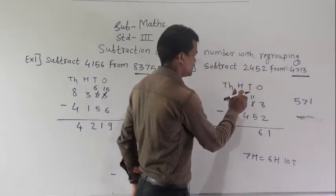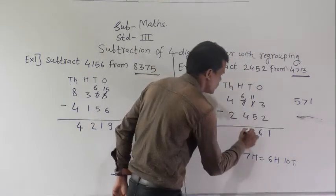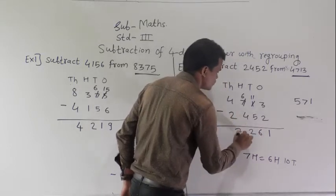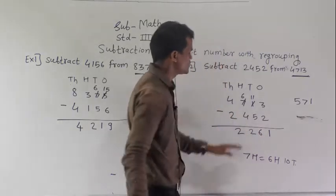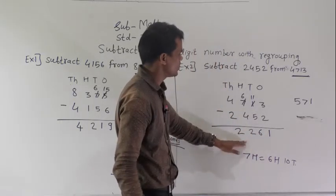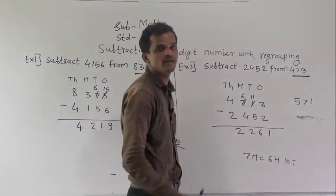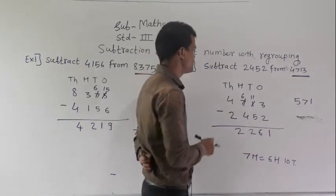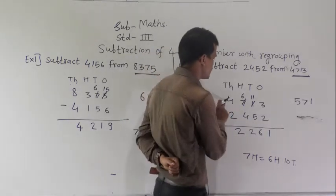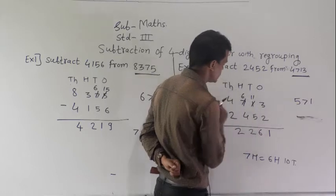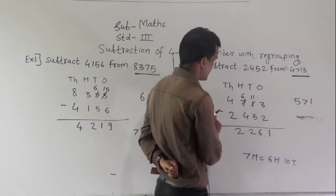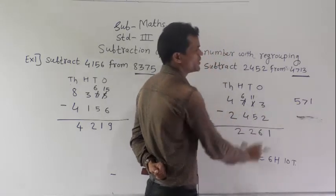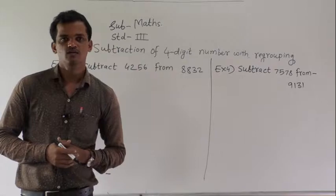Now subtract 5 from 11: 11 minus 5 equals 6. Then 6 minus 4 equals 2, and 4 minus 2 equals 2. So 2,261 is the difference between 4,713 and 2,452.